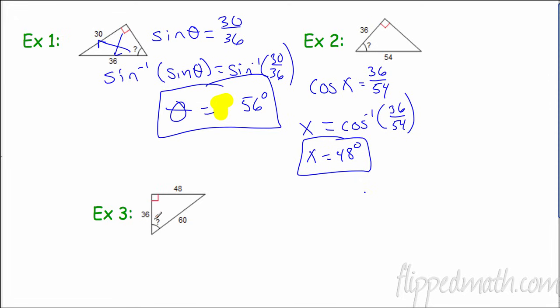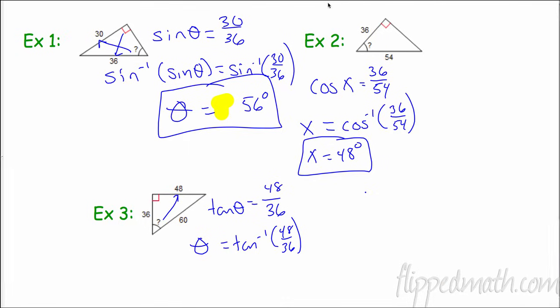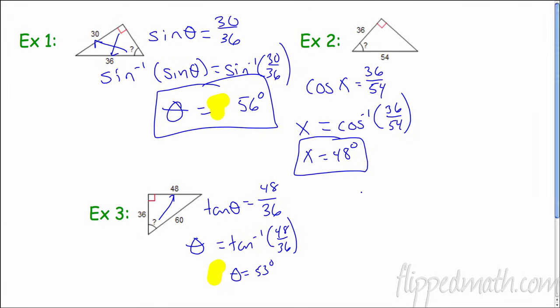Let's do this one now. We can do anything we want because we have all three sides. We haven't done tangent yet, so let's do tangent. So tangent of theta equals opposite, 48, over adjacent, 36. So theta equals inverse tangent of 48 over 36. So we get second tangent, 48 divided by 36, 53.1 stays 53. So theta is 53 degrees.